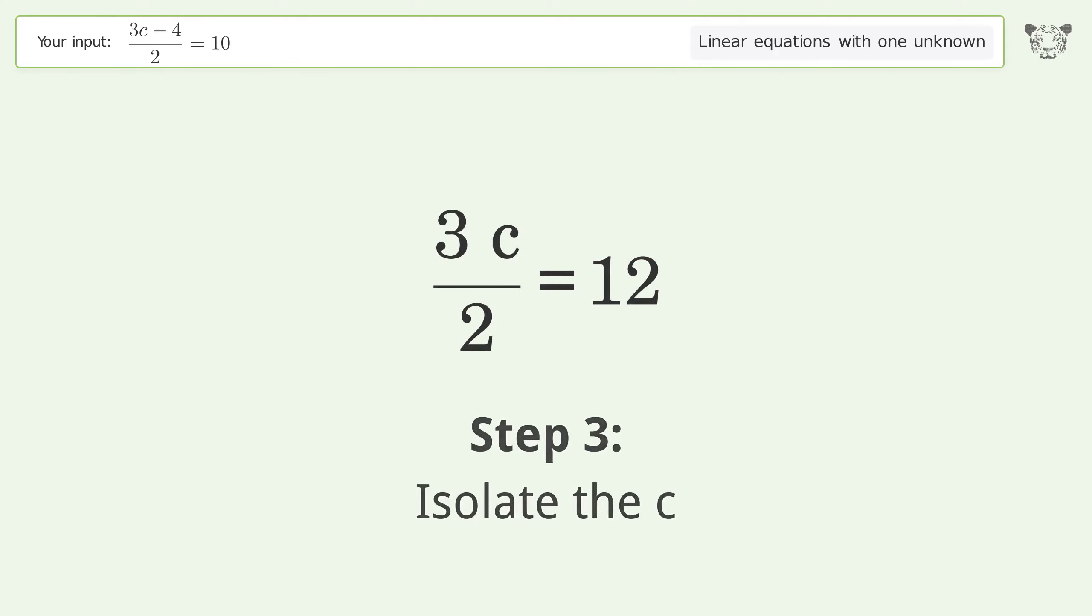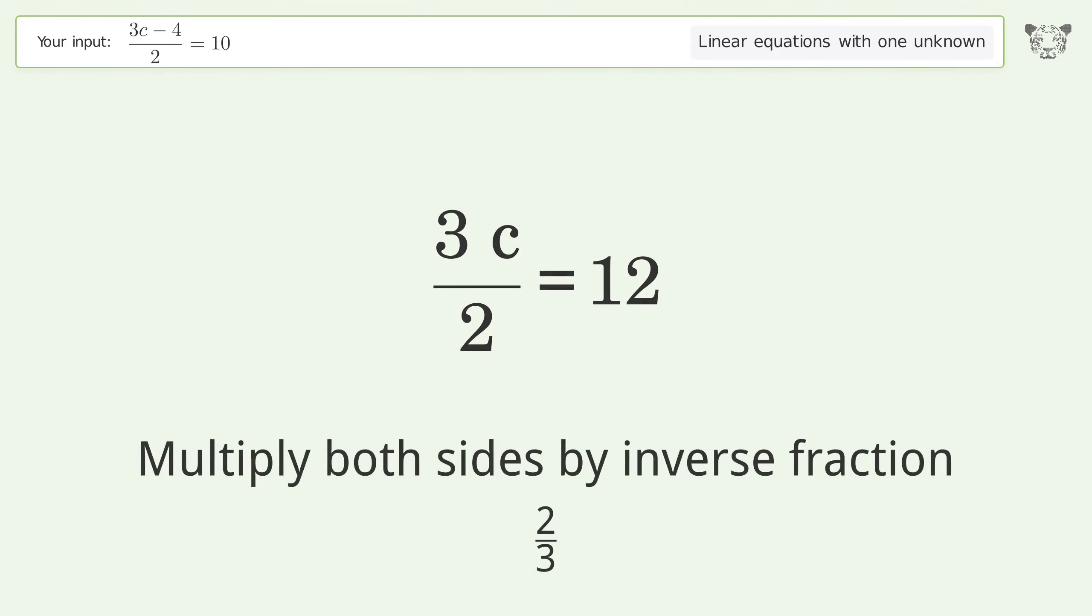Isolate the c by multiplying both sides by the inverse fraction 2 over 3.